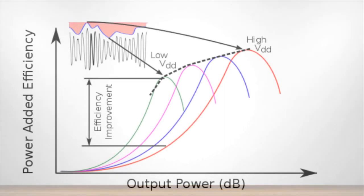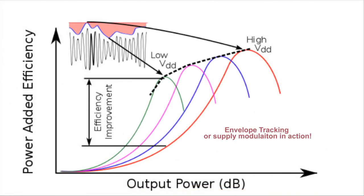Here in this figure we can see the effect of the change of the supply with respect to the envelope. This shows that if we change the VDD of the power amplifier with respect to the envelope, we get a set of curves of output power versus efficiency such that at the back-off level also the peak power is still high.